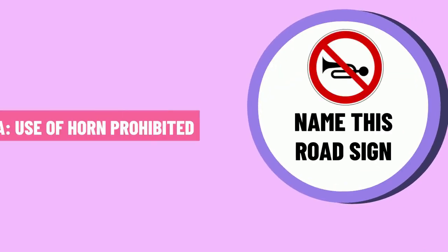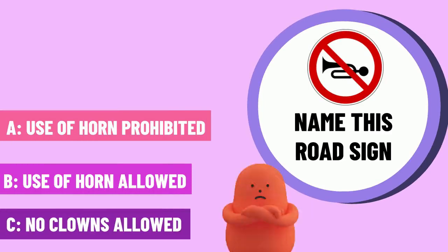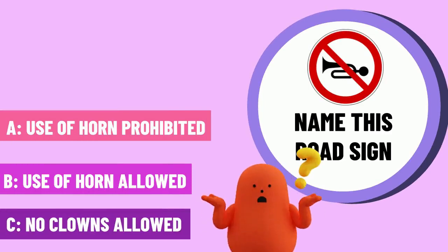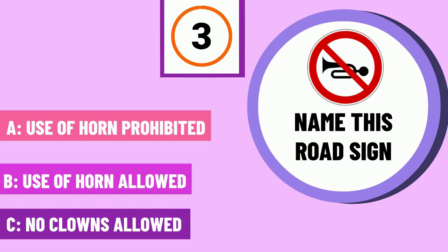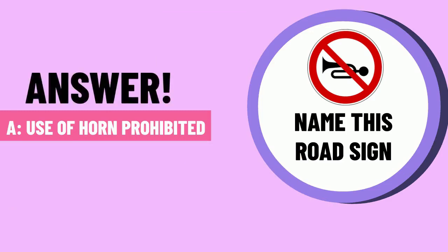Question 10. Name this road sign. The correct answer is C — use of the car horn is prohibited.